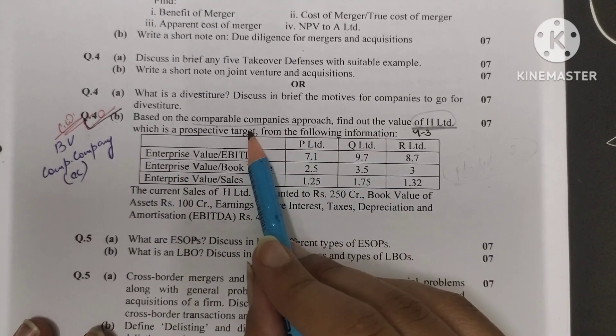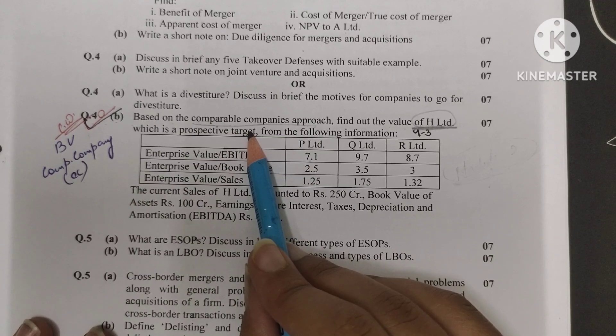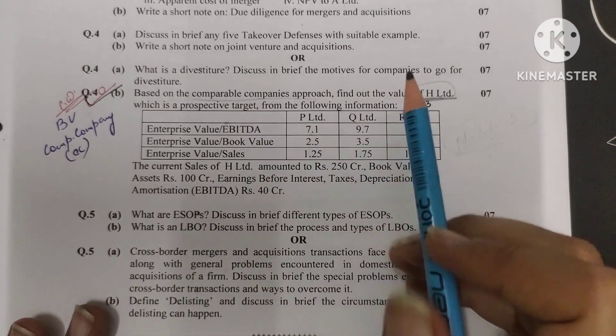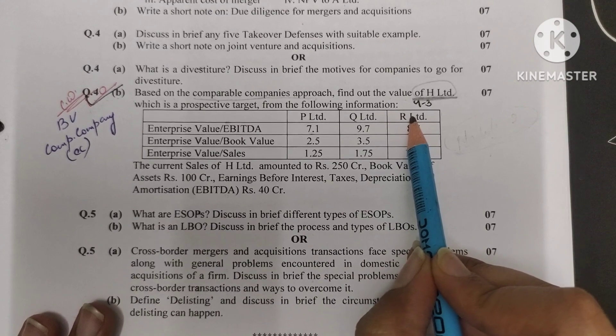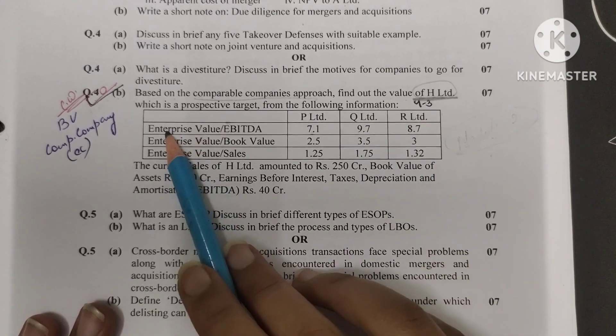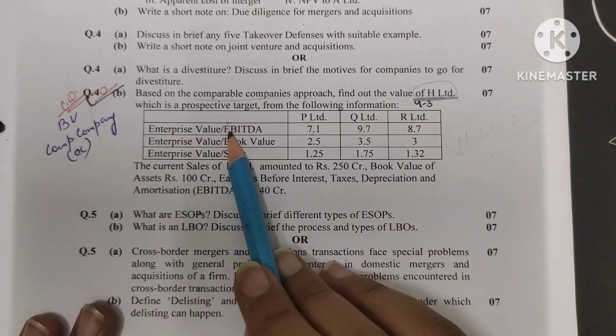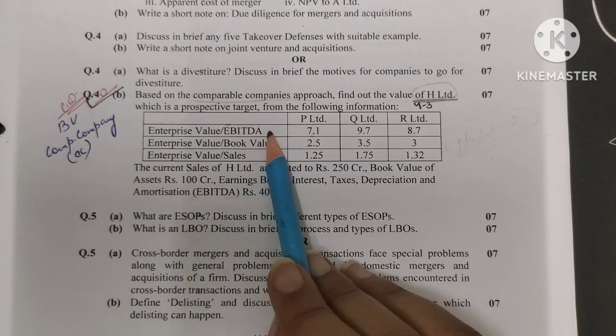From the following information, there is a target company selected. It means simply, its competitors who want to target three company information is given: P Limited, Q Limited, and R Limited. What data is given?